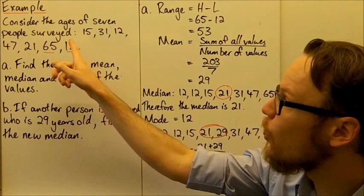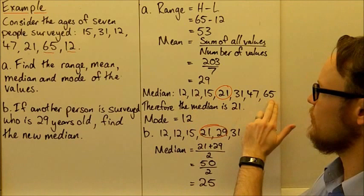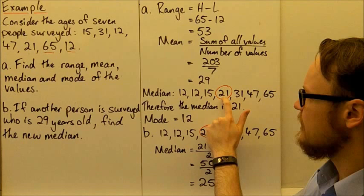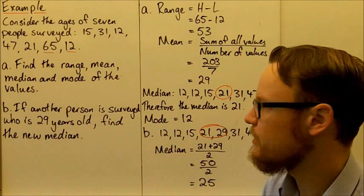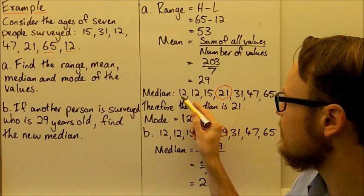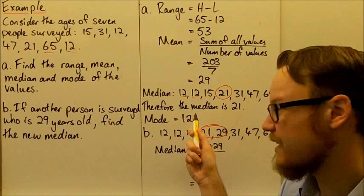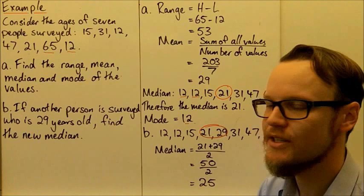For the median, we order the numbers from lowest to highest — 12 to 65 — and the middle value is 21. So the median is 21. The mode is the most commonly occurring number. Everything has a frequency of one except for 12, which has a frequency of two. So the mode is 12.